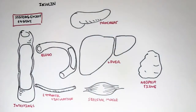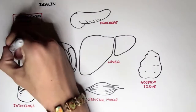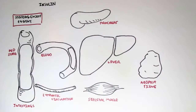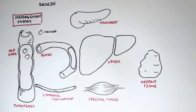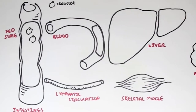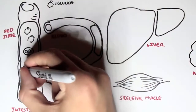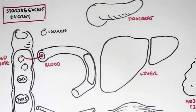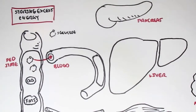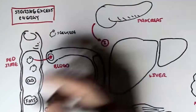Insulin has a major effect during the fed state — basically just after we eat. Because after we eat, we would have many macromolecules running through our intestines, such as glucose, amino acids, and fats. Concentrating on glucose first: glucose will be absorbed by the blood.